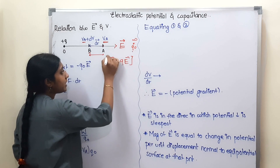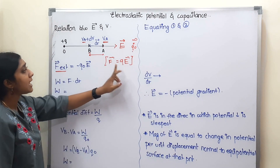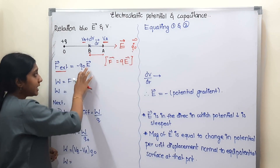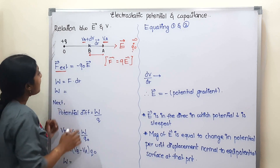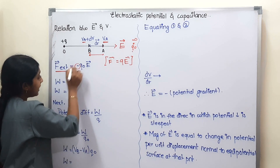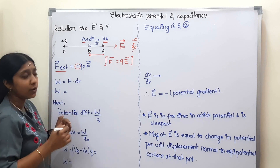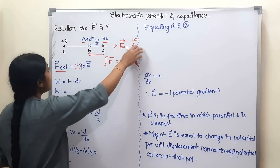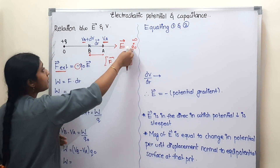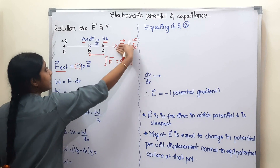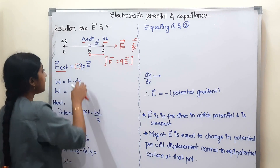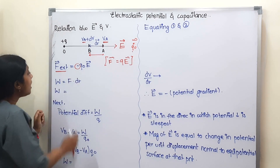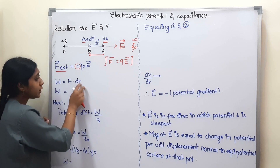We already have this formula from the first chapter. If we take unit charge q₀, the force becomes q₀E. The external force acts in the negative — that is, in the opposite direction to the electric field. So the external force is negative q₀E, acting in the opposite direction.